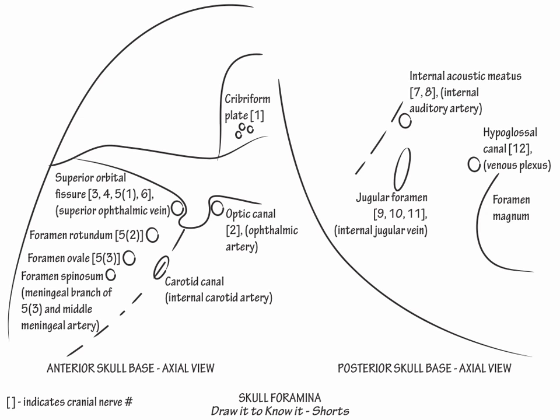Then show that cranial nerve 11 passes up through the foramen magnum before it passes out of the cranium through the jugular foramen. Lastly, indicate that the vertebral arteries and spinal vessels traverse foramen magnum as well. This concludes our diagram.